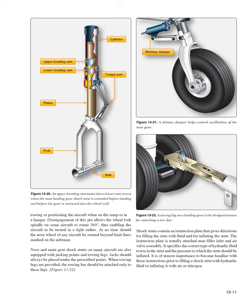Nose gear struts are often equipped with a locking or disconnect pin to enable quick turning of the aircraft while towing or positioning on the ramp or in a hangar. Disengagement of this pin allows the wheel fork spindle on some aircraft to rotate 360 degrees, enabling the aircraft to be turned in a tight radius. At no time should the nose wheel of any aircraft be rotated beyond limit lines marked on the airframe. Nose and main gear shock struts on many aircraft are also equipped with jacking points and towing lugs. Shock struts contain an instruction plate giving directions for filling the strut with fluid and for inflating the strut, specifying the correct type of hydraulic fluid and inflation pressure.